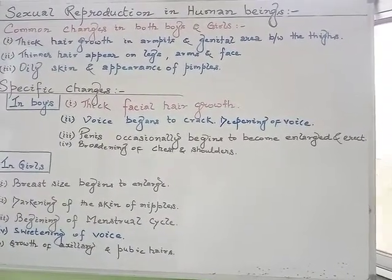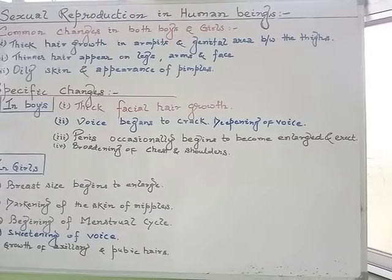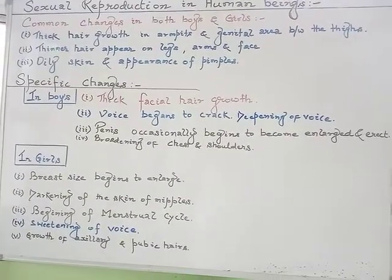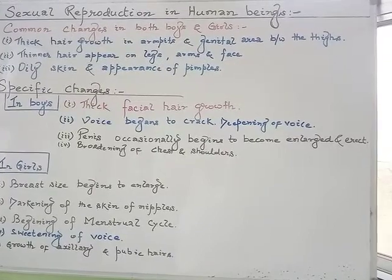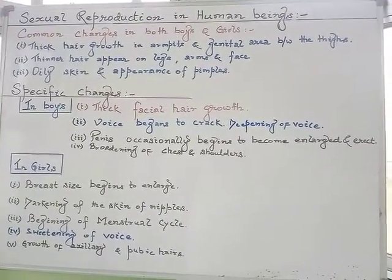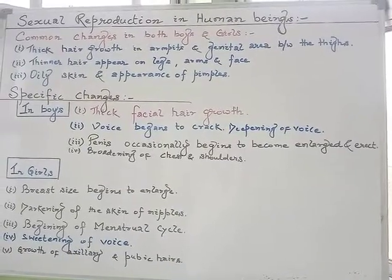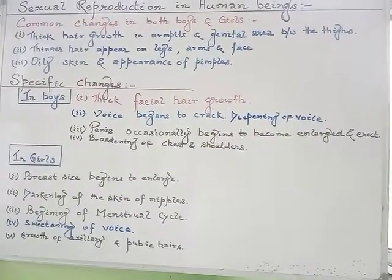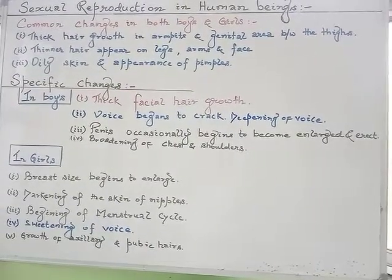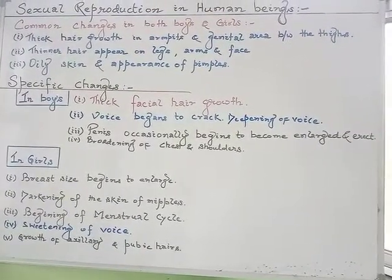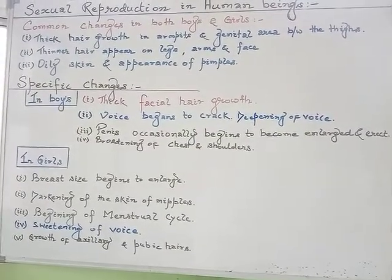The accessory or secondary sex characters in human beings appear during puberty due to the action of sex hormones secreted by the anterior pituitary gland, and later by the action of male and female sex hormones. These characters distinguish the two sexes of a species but do not directly play any role in reproduction. They include low pitch and high pitch of sound, external genital organs, and different patterns of distribution of hair on the body.